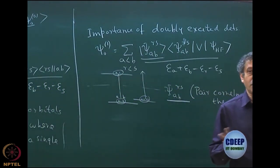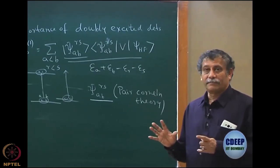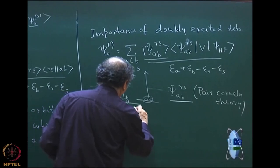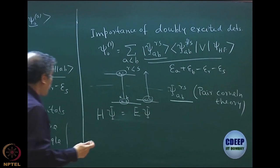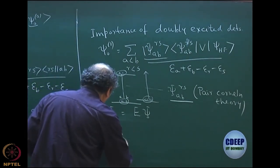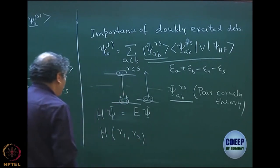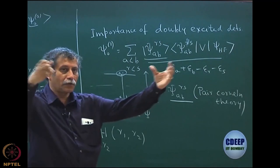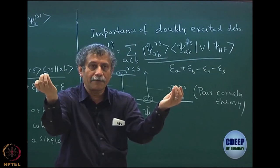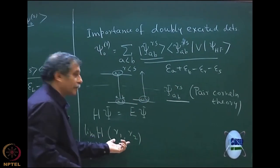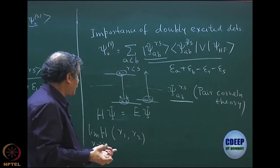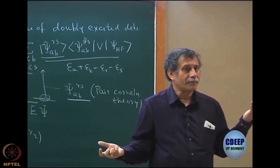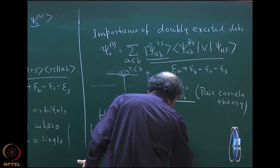Why is excitation related to correlation? Let us understand physically what correlation means. We have a Hamiltonian and we are trying to solve the Schrödinger equation. For a two-particle problem with particles at R₁ and R₂, as R₁ tends to R₂, the 1/R₁₂ term in the Hamiltonian becomes infinity — this is what is called a singularity. The Hamiltonian becomes singular in this limit.